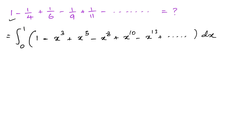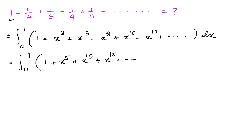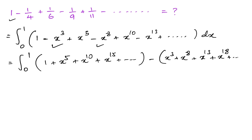Let's separate the plus terms and minus terms. We have the integral from 0 to 1 of: (1 plus x⁵ plus x¹⁰ plus x¹⁵ plus ... going to infinity) minus (x³ plus x⁸ plus x¹³ plus ... going to infinity), all times dx.